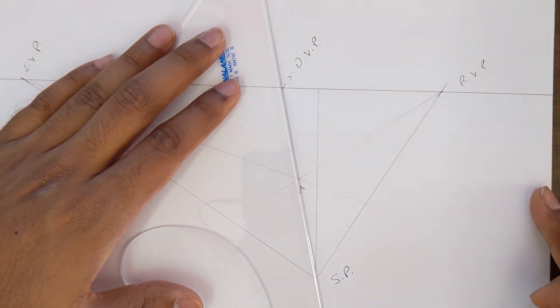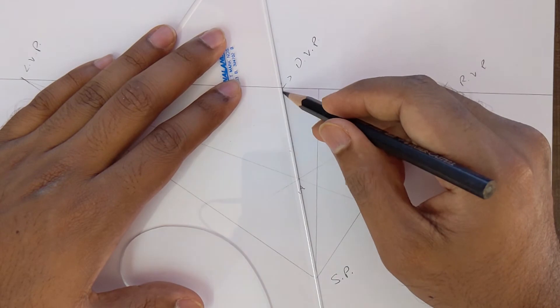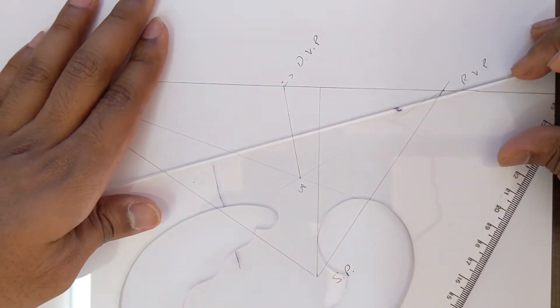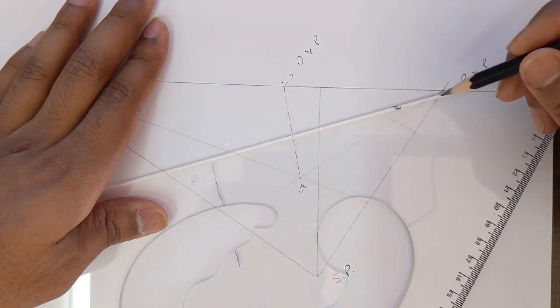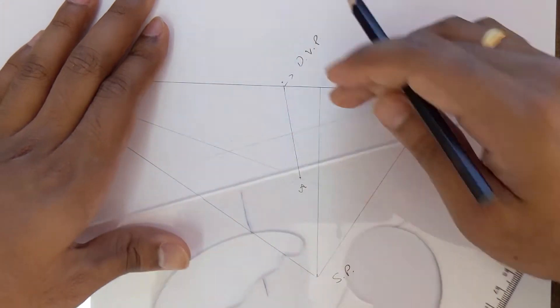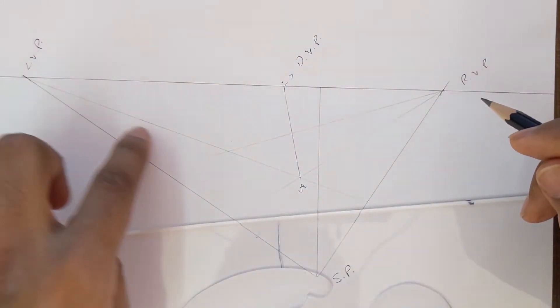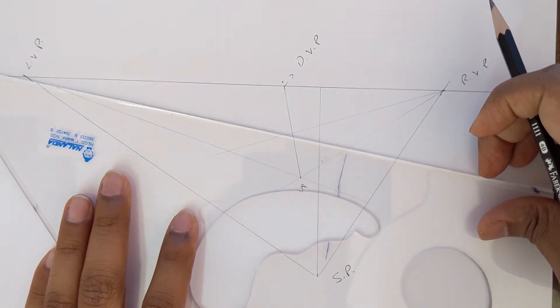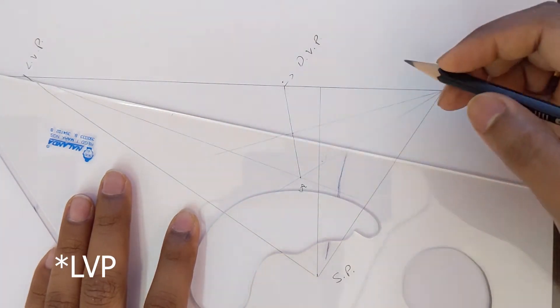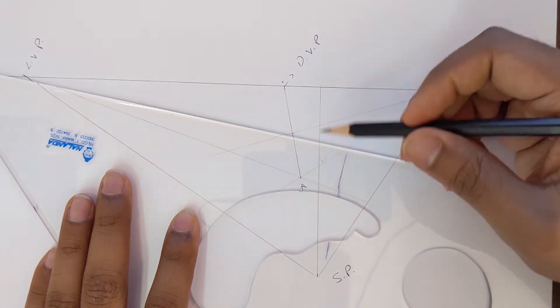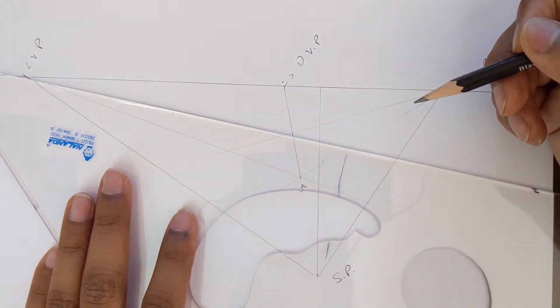Now from the point A, draw a line which connects the diagonal vanishing point. Once we have that, draw another line from the right vanishing point to meet this line. From the left vanishing point and from the right vanishing point, draw a line through this intersection of this new line which we have drawn and the line connecting the diagonal vanishing point and the point A.